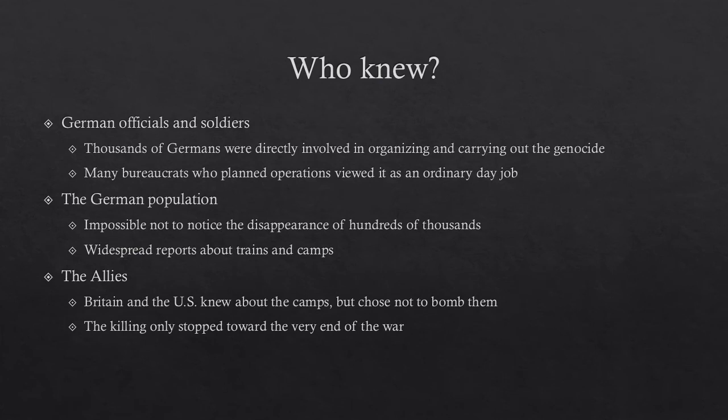Who knew about this? The depressing answer is: lots of people. German officials and soldiers knew, since the destruction of millions required thousands of Germans to directly work toward this goal. Many German bureaucrats working for the Nazi government treated it as an ordinary 9-to-5 job — planning train movements and supplying poison gas to the camps. The German population at large also knew; it was impossible not to notice the disappearance of hundreds of thousands of people, and there were widespread reports of trains leaving to the east filled with people and coming back empty.